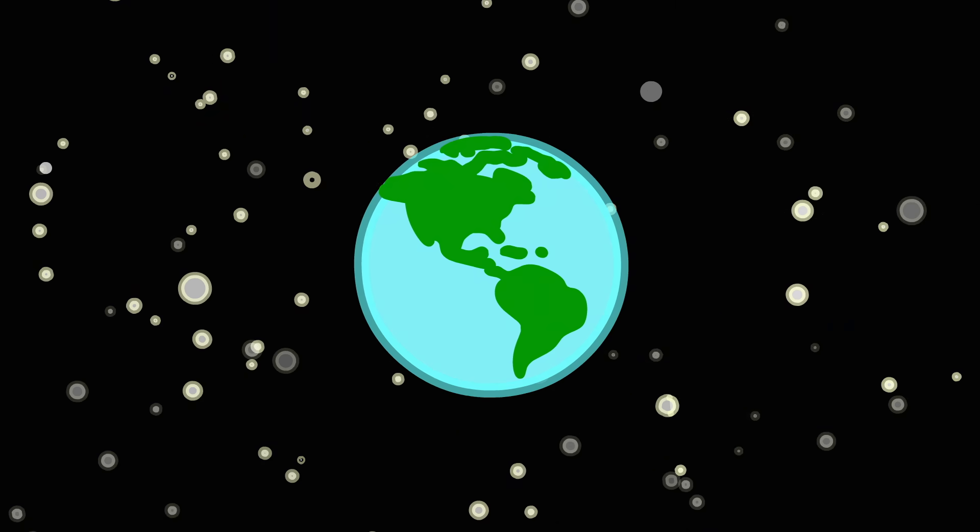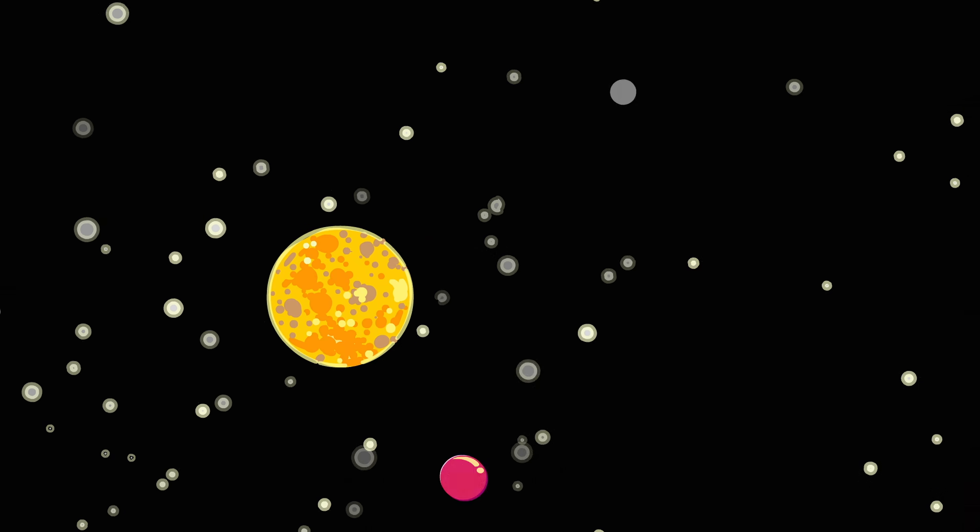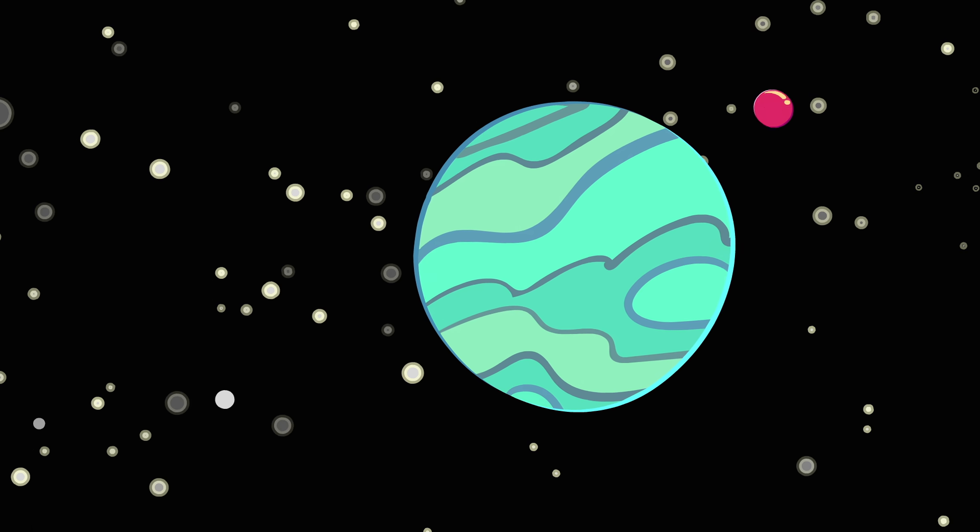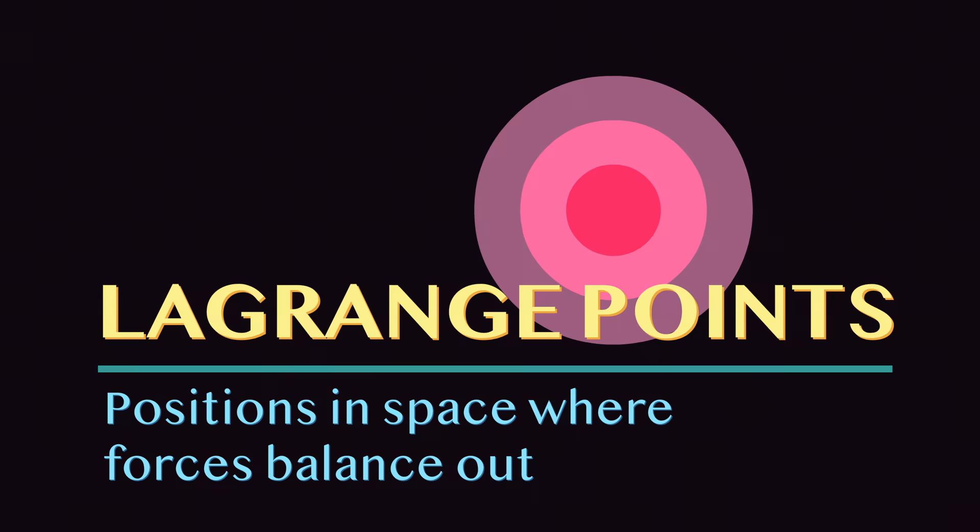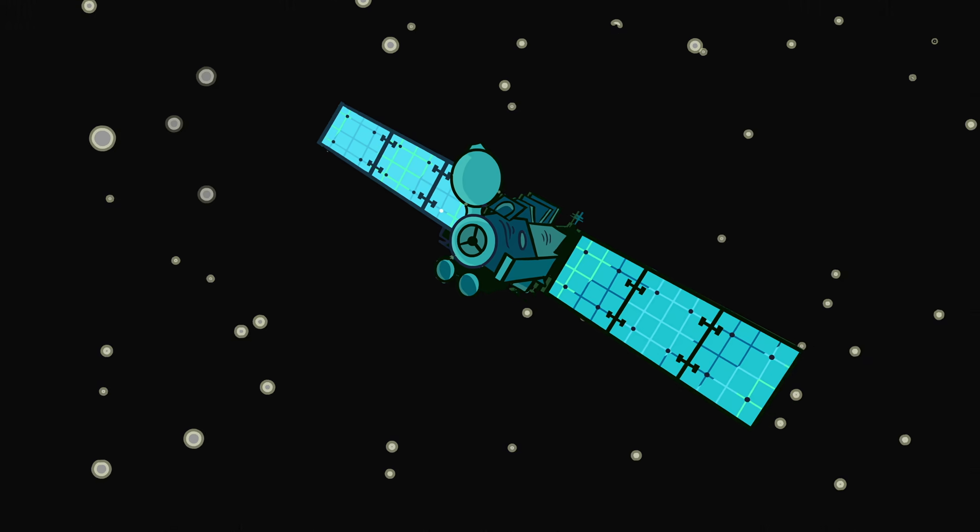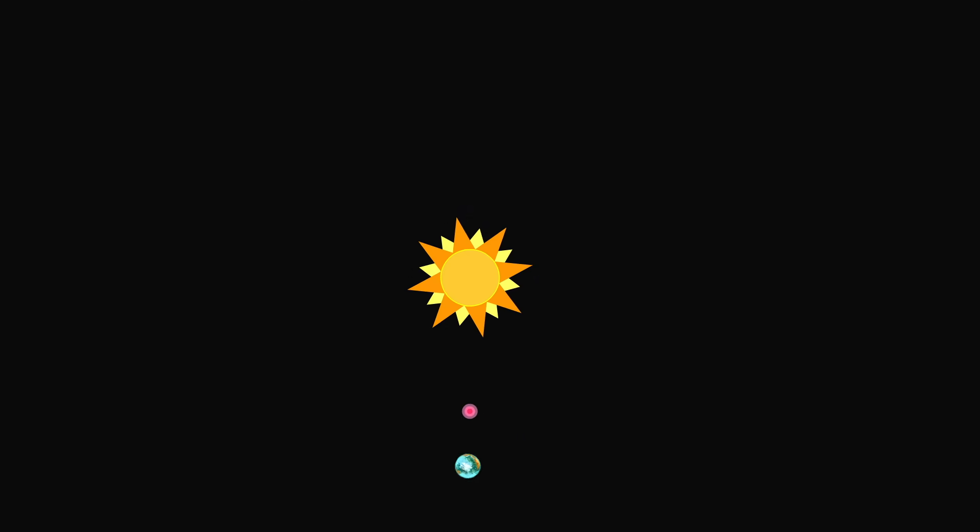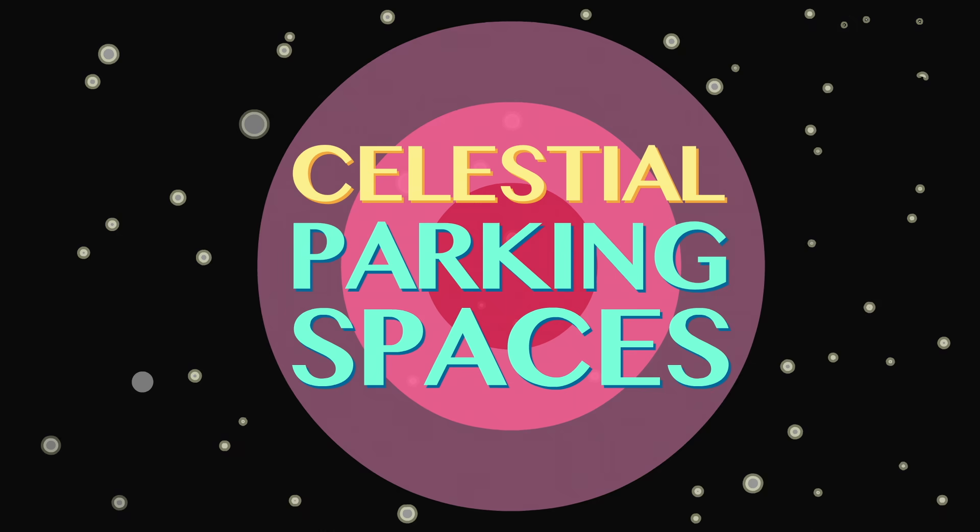All celestial bodies exert a gravitational force on nearby objects, pulling them in and out of orbits. And gravity acts alongside several apparent forces to determine what those orbits look like. However, Lagrange points are places where all these forces balance out. Essentially, Lagrange points are celestial parking spaces.